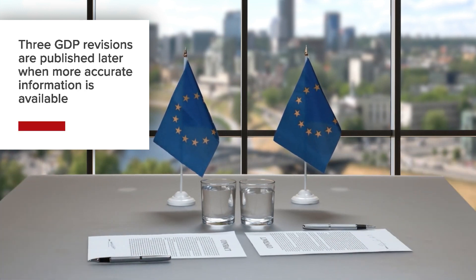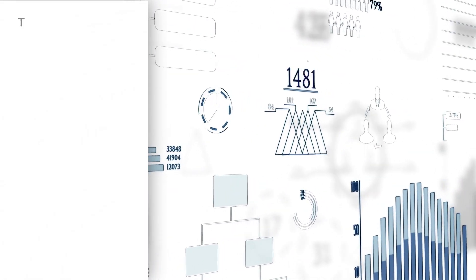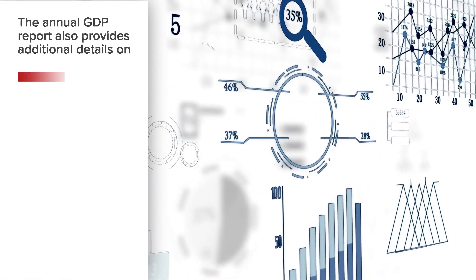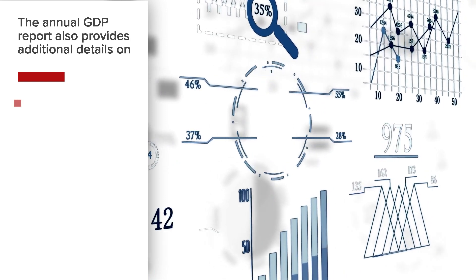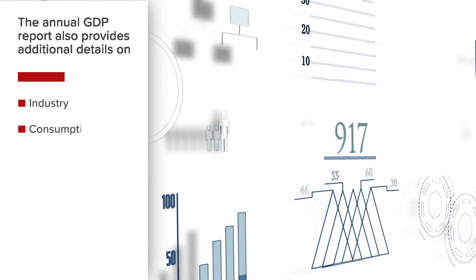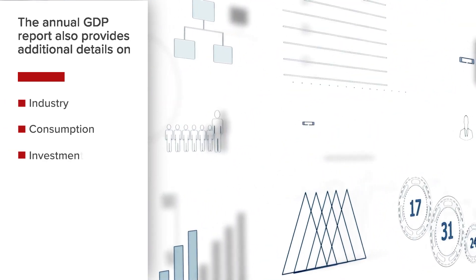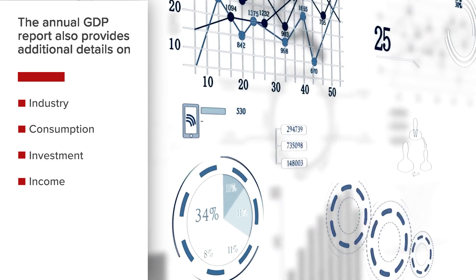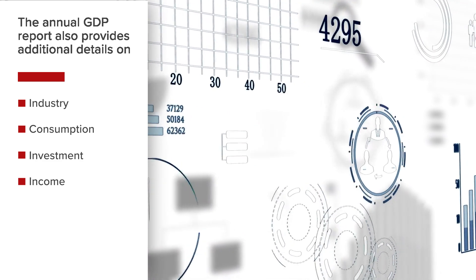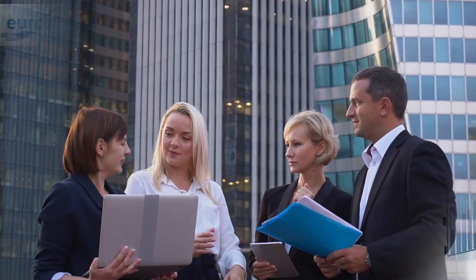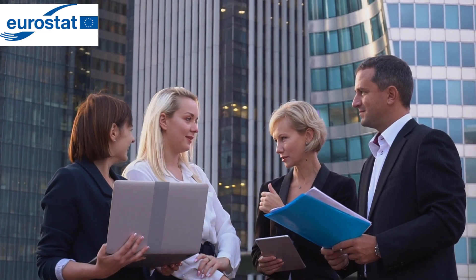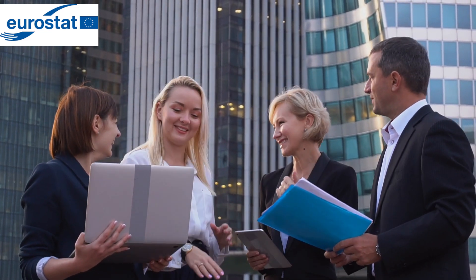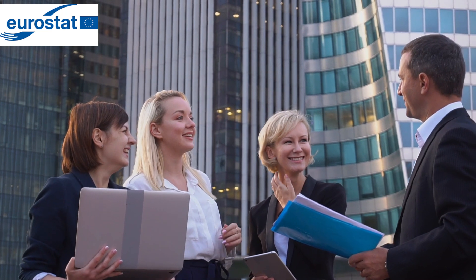For more detailed and comprehensive GDP data, the annual GDP report provides details including growth data by industry, consumption growth, investment growth, and income growth, and is released in the June following the referenced year. Eurostat's mission is to provide high-quality European statistics and data to support public and private sector decision-making.